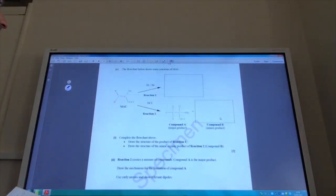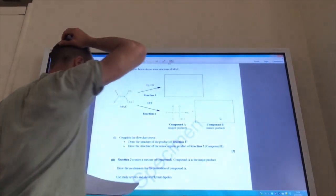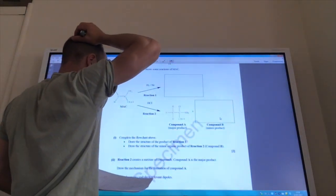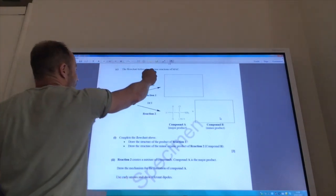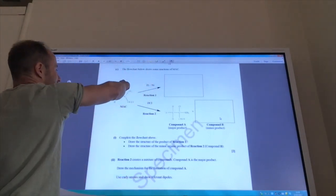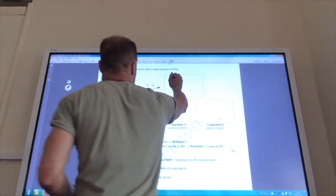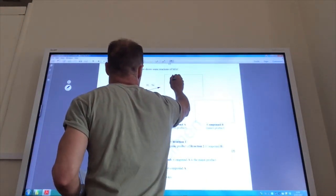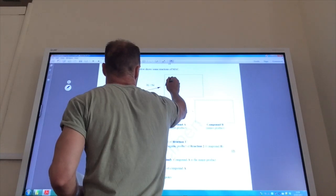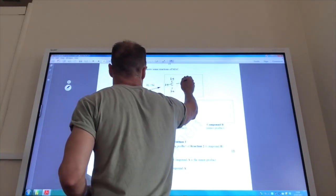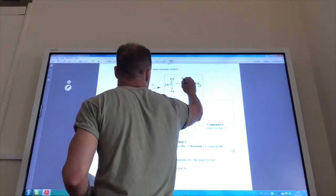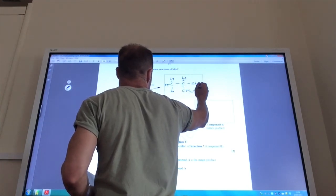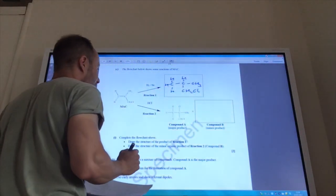Okay, so the flow chart shows some reactions below. We need to give the product of reaction 1, and the structure of the main organic for reaction 2. So I'm using hydrogen with nickel, so I'm going to add hydrogen across that double bond. So, it puts hydrogen there, there, there, carbon, let's put my hydrogen there, CH3 there, and CH2Cl there. I've just added hydrogen across that double bond.